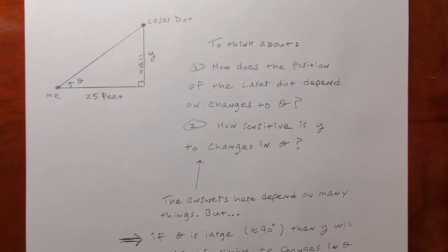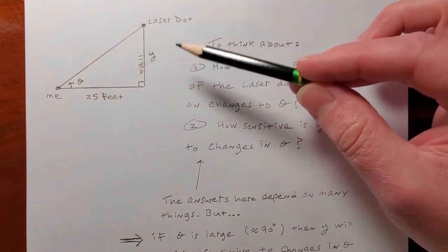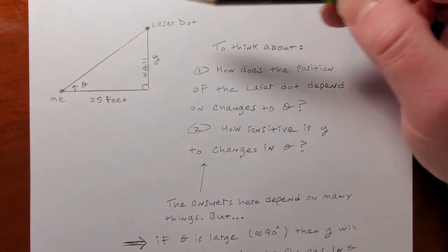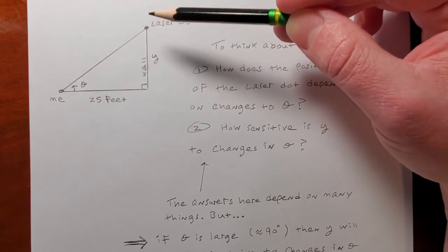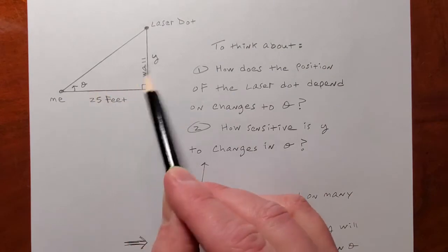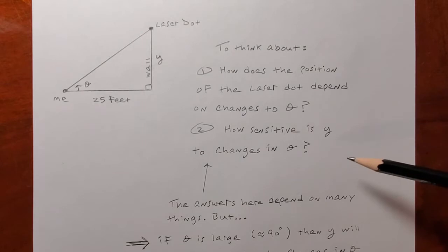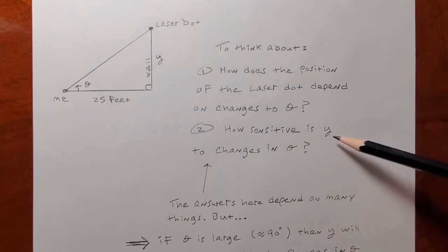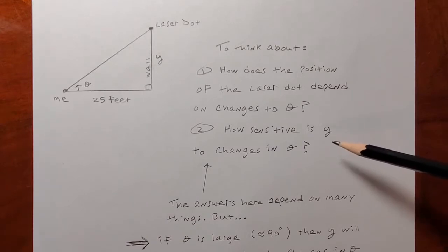Something along those lines is what I'm wondering about. Of course, that's a number — it might be that if theta jumps up and down by a degree, then y might jump up and down by one and a half feet or something like that. A change in this thing is definitely going to cause some kind of measurable change in that other thing. Another way to say that is: how sensitive is y to changes in theta?